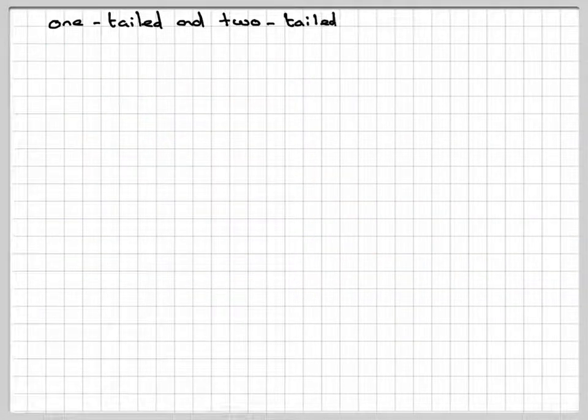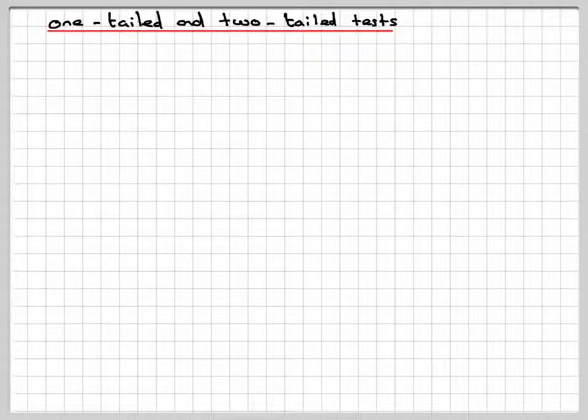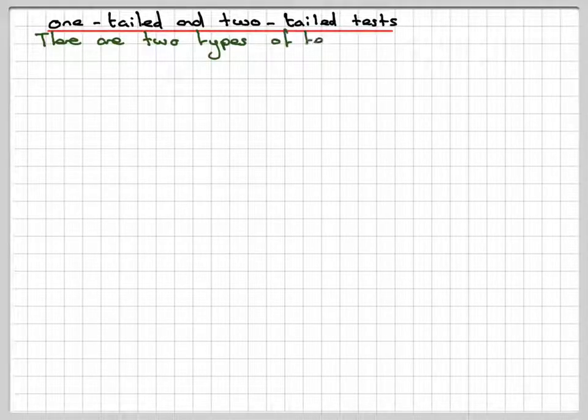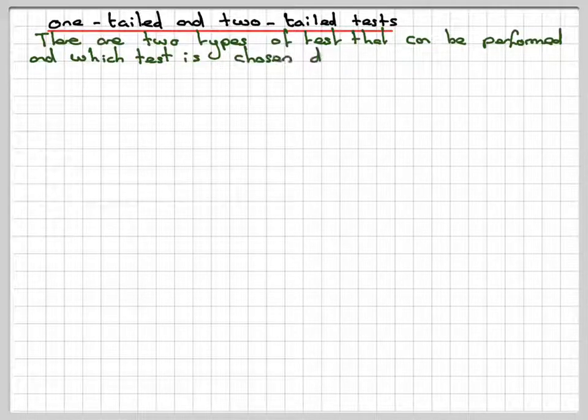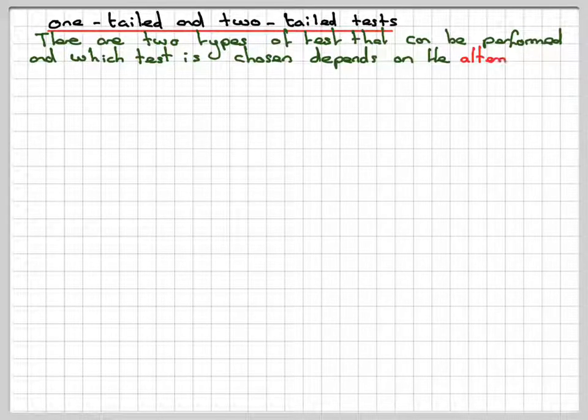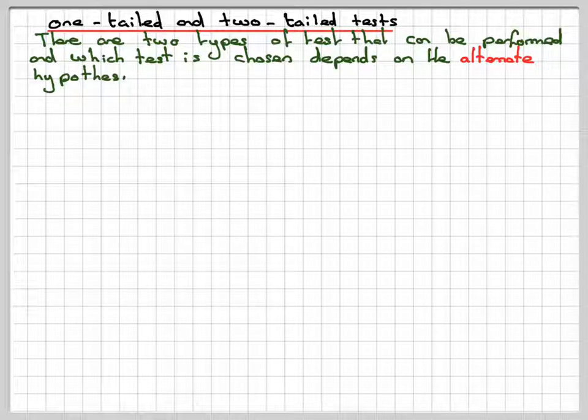So once you get an alternative hypothesis, then we have two types of tests that we do. We have a one-tailed or a two-tailed test. Two types of tests that can be performed, which test is chosen depends on the alternate hypothesis H1.